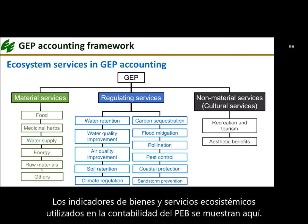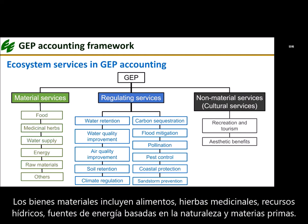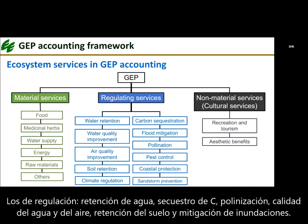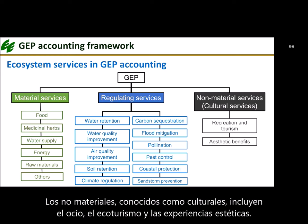The ecosystem goods and services indicators used in GEP accounting are shown here. Material goods include food, herbs for traditional Chinese medicine, water resources, nature-based energy sources, and raw material. Regulating services include water retention, carbon sequestration, pollination, water quality improvement, air quality improvement, soil retention, and flood mitigation. Non-material services, also known as cultural services, include recreation, ecotourism, and aesthetic experiences.